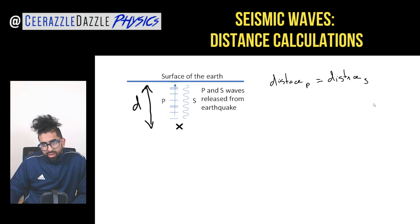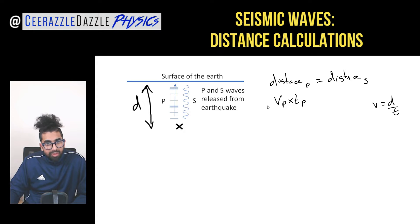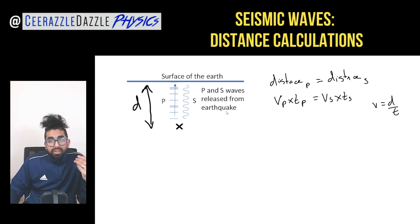We know that velocity equals distance over time, so distance equals velocity times time. Therefore, the velocity of the P wave multiplied by the time taken for the P wave to reach the surface equals the velocity of the S wave multiplied by the time taken for the S wave to reach the surface: Vp × Tp = Vs × Ts.